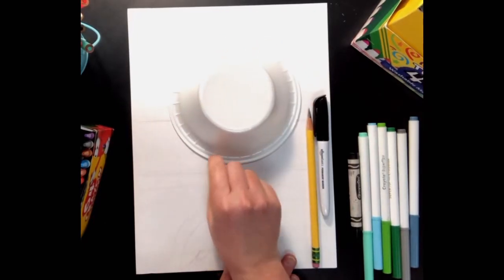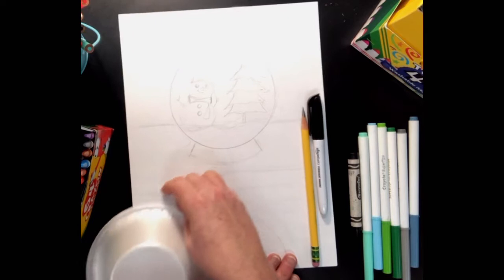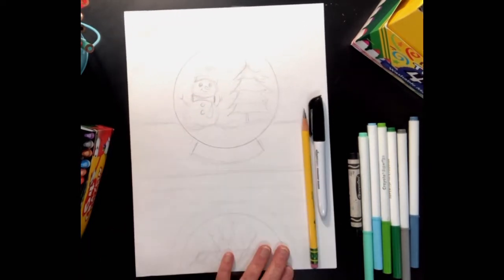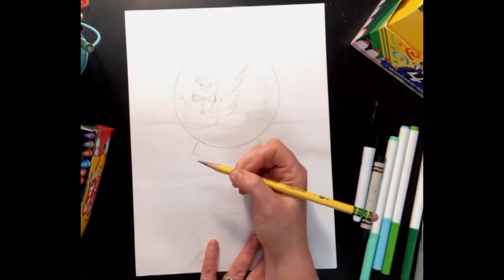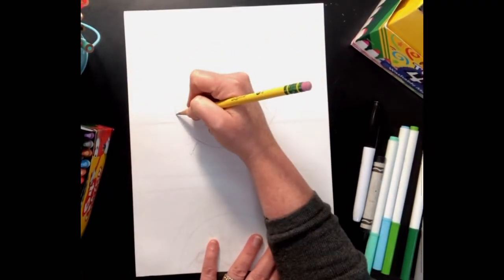You just want to make sure that it's big enough so that you end up with a snow globe that has enough space so that you can draw all the things inside. Now I already lightly traced my snow globe, so I am ready to go.